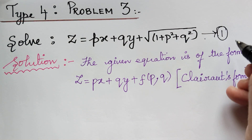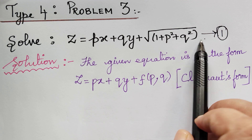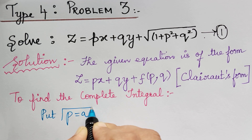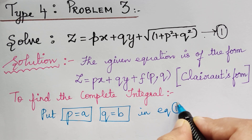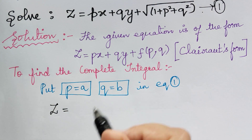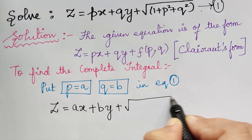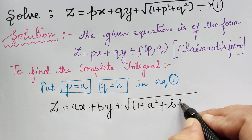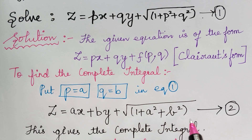Let us mark the given equation as equation 1. In order to find the complete integral, we put p = a and q = b in equation 1. So what we get is z = ax + by + √(1 + a² + b²). This is the complete integral, marked as equation 2.